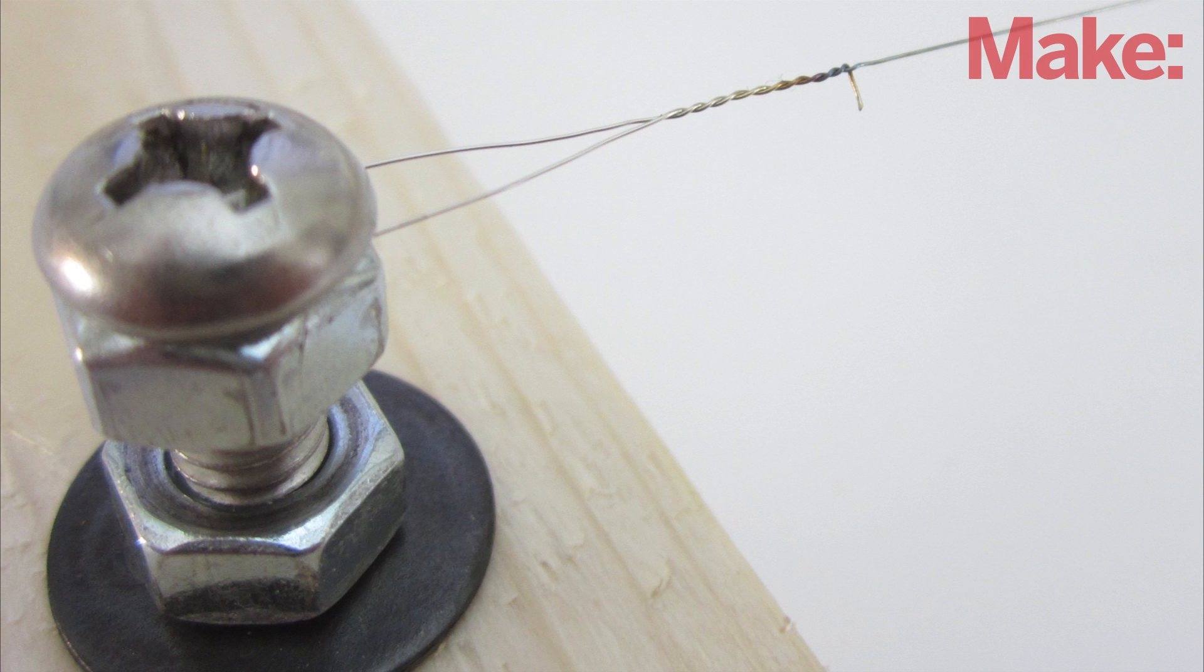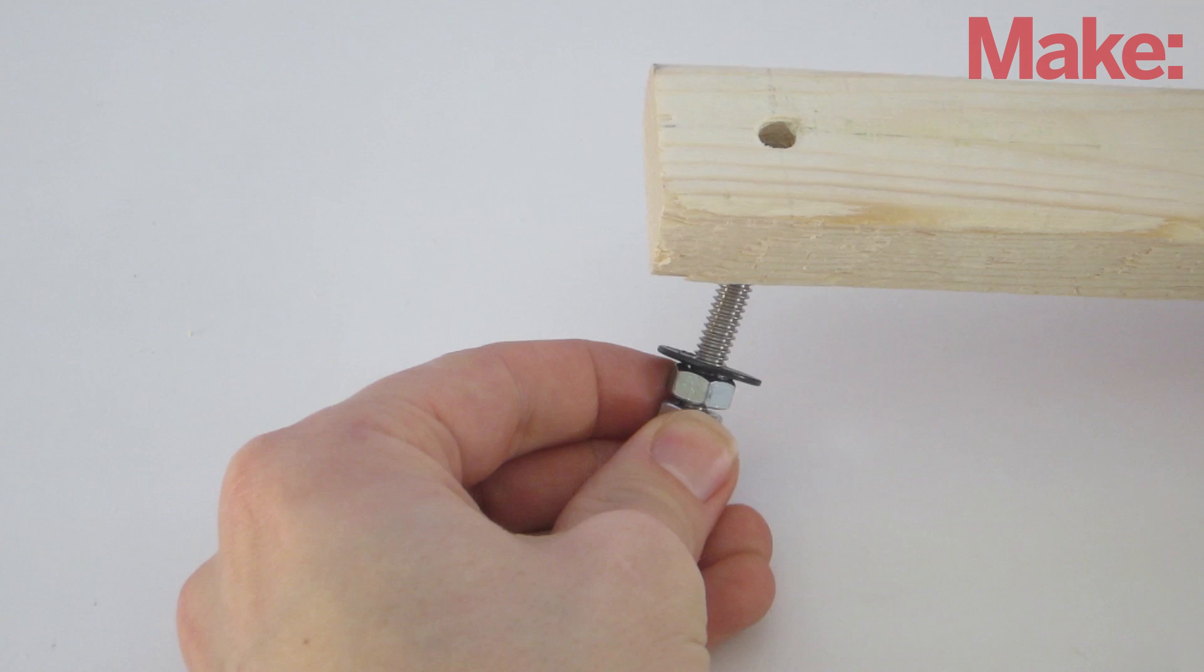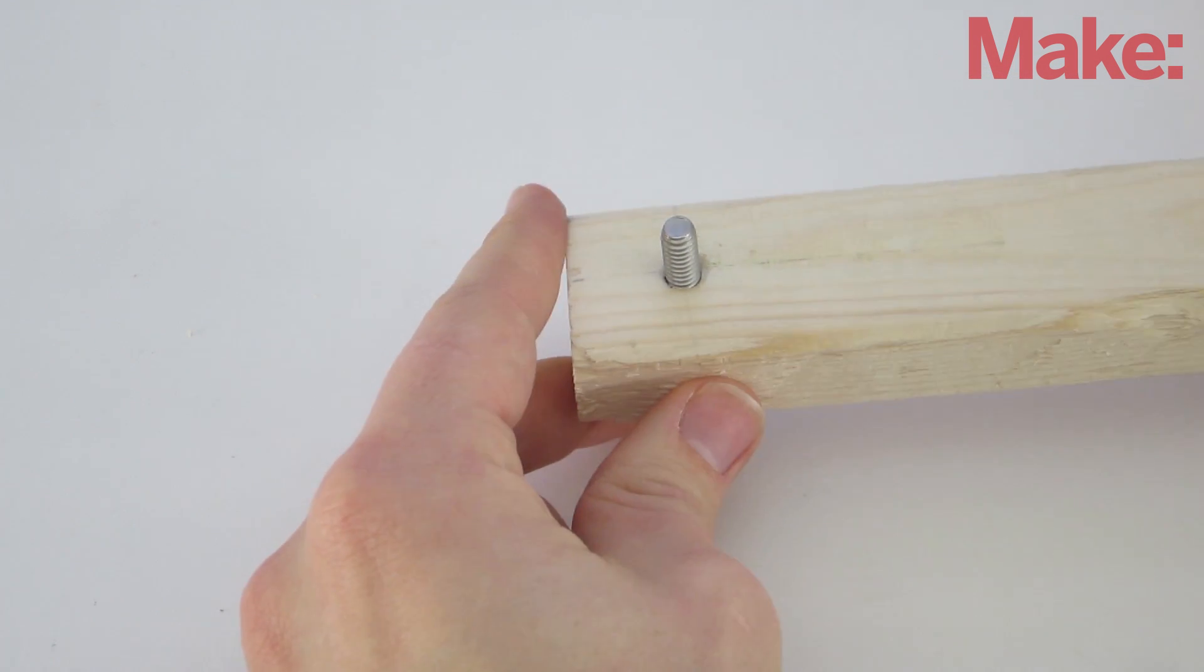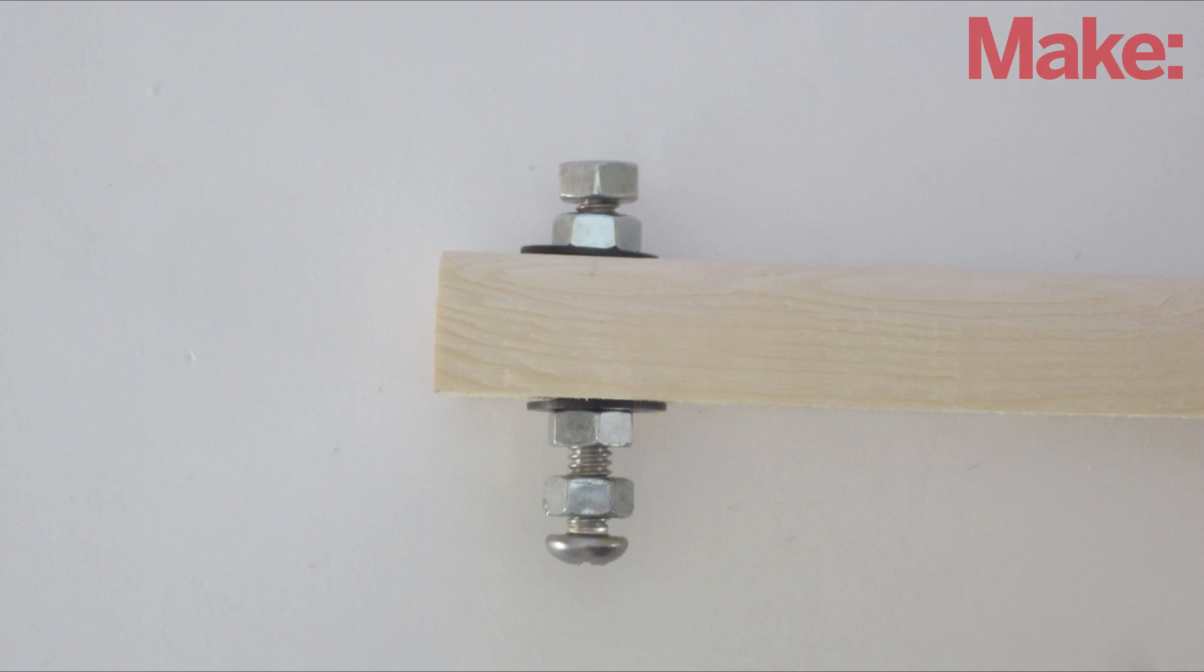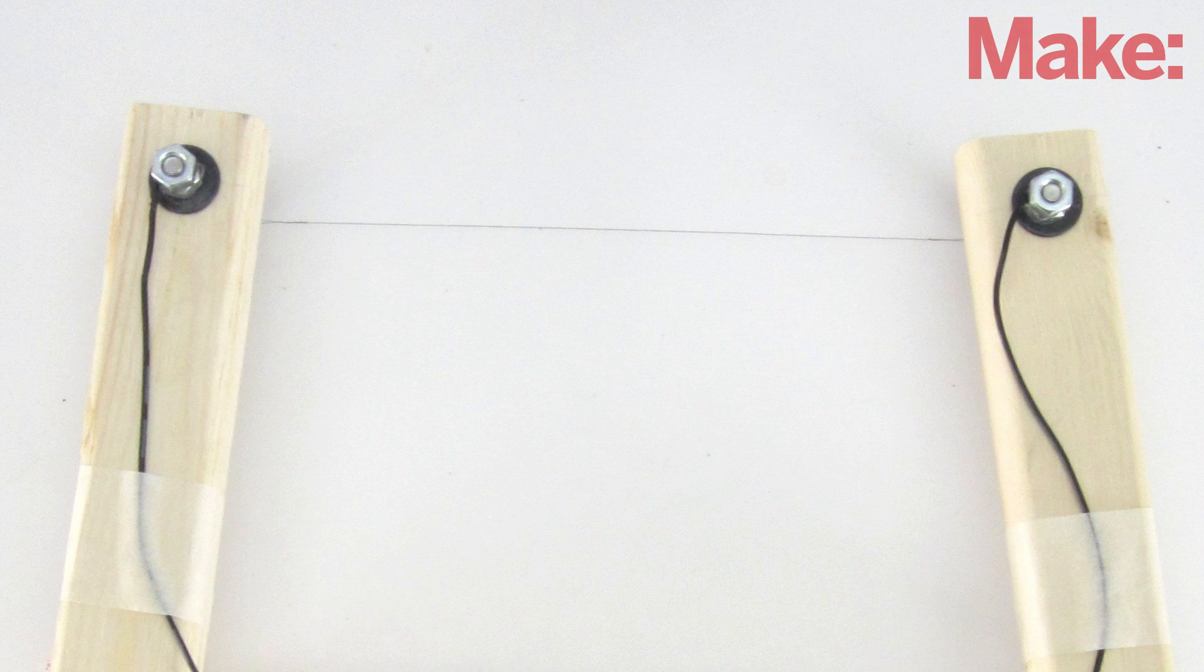Now you need to attach the wire mounting bolts. Add two nuts and a washer to the two remaining bolts. Fit these through the holes on the ends of the two side boards. Then add a washer and another two nuts onto the other side. These bolts are where we'll attach the nichrome wire and the wires from the power supply.